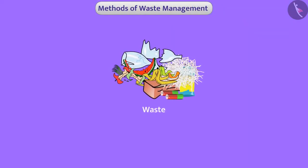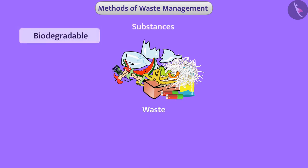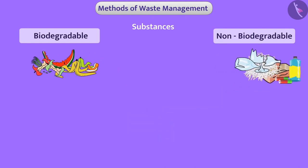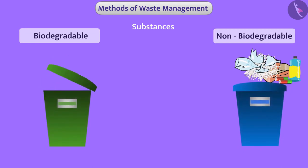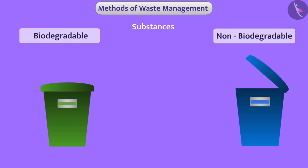To avoid these problems, we need to manage waste in proper ways. We have seen that substances can be biodegradable or non-biodegradable. Therefore, we should segregate waste. For this, we can use two types of dustbins — in one we collect biodegradable waste and in the other non-biodegradable waste. Both types of waste can then be disposed of differently.